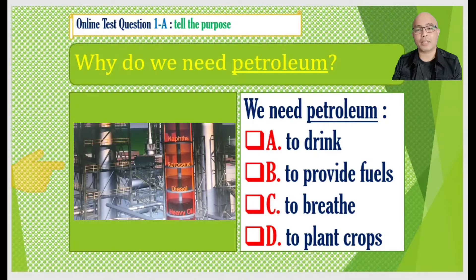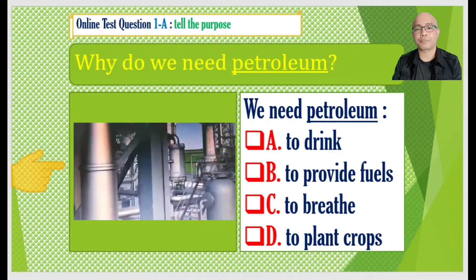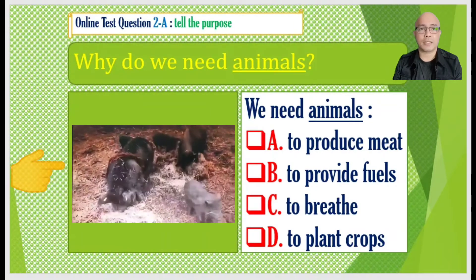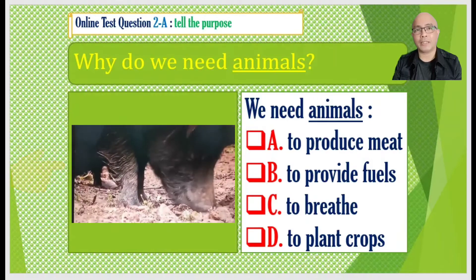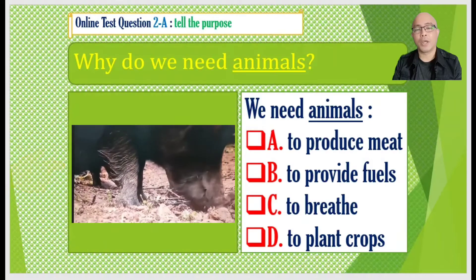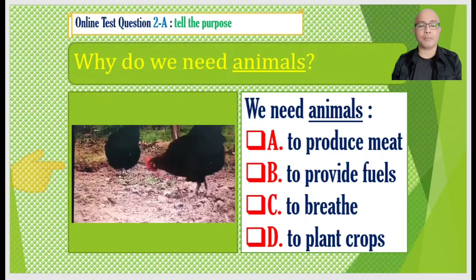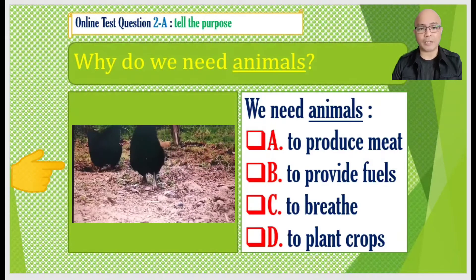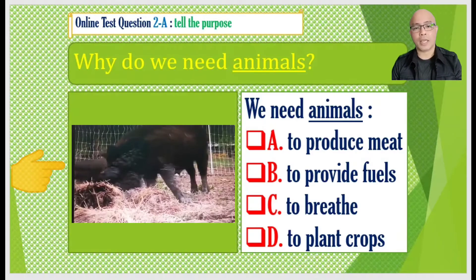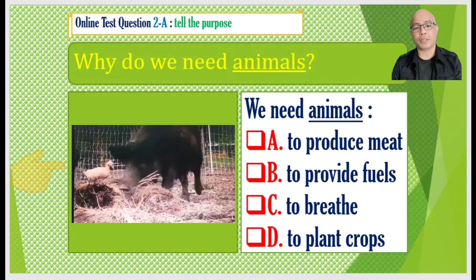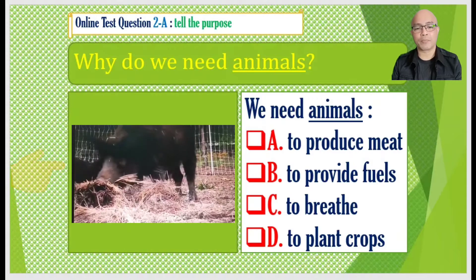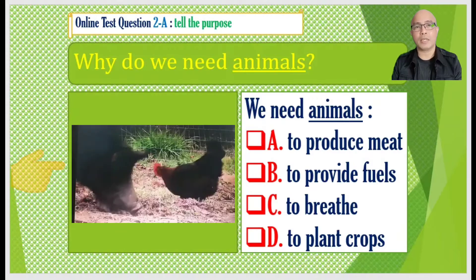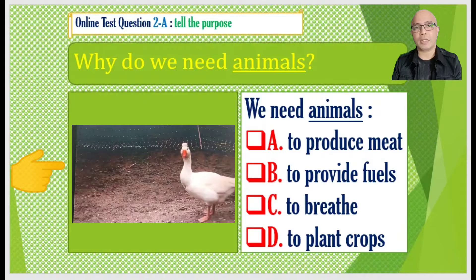Practice test number two: Why do we need animals? We need animals — A to produce meat, B to provide fuels, C to breathe, D to plant crops.